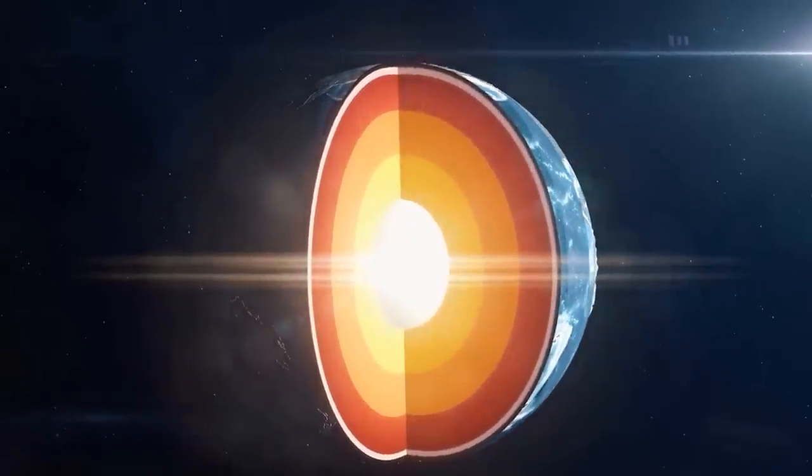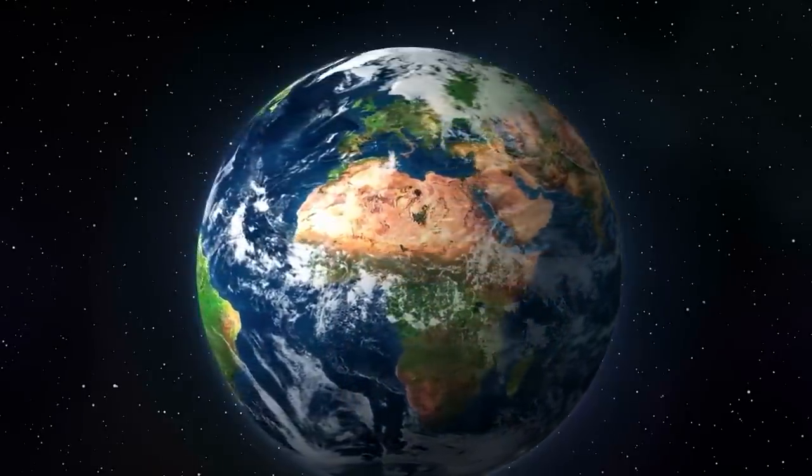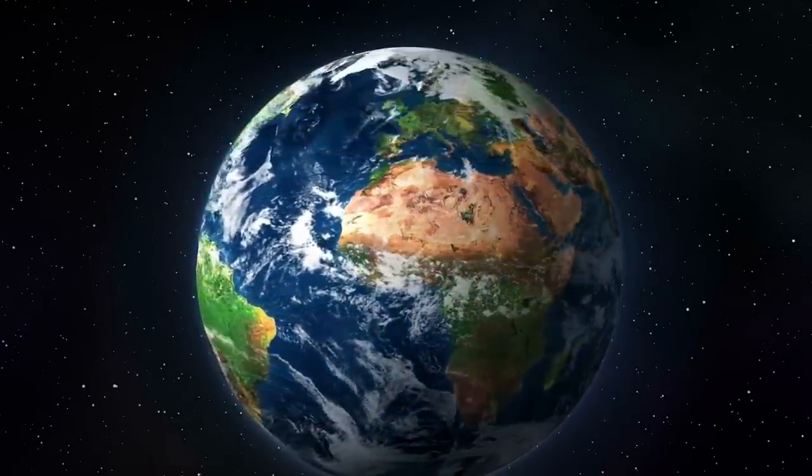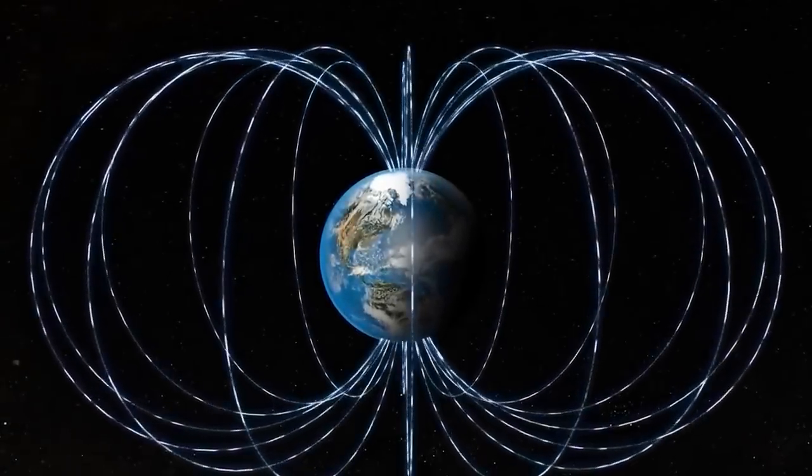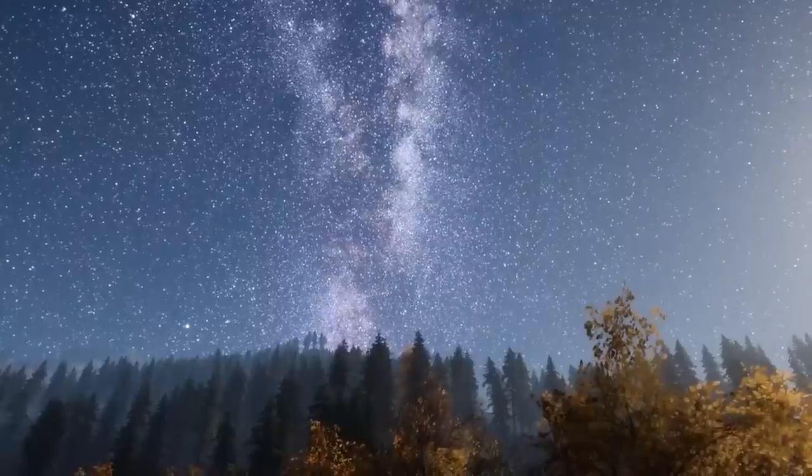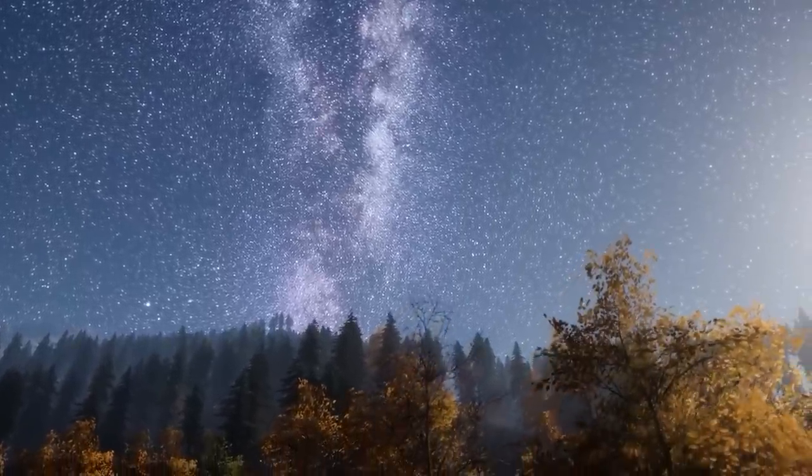But what exactly is the Earth's magnetic field and how did it come about? Deep beneath the Earth's surface, at depths of thousands of kilometers, lies an extensive reservoir of molten iron within the outer core. As Earth rotates, this liquid iron flows, generating electrical currents that give rise to Earth's magnetic field.